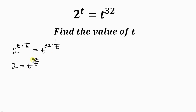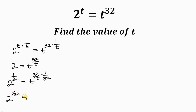Our next step is to get rid of the 32, and we do that by multiplying the exponent on the left and right by 1 over 32. On the left, the exponent becomes 1 over 32, giving us 2 to the 1 over 32. On the right, the 32 cancels out 32, leaving t to the 1 over t. Now the variable is on one side and our values are on the other side, so 2 to the 1 over 32 equals t to the 1 over t.